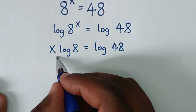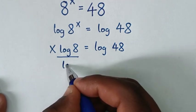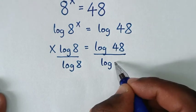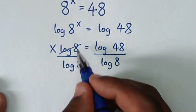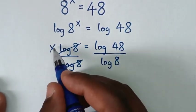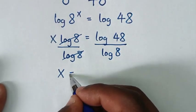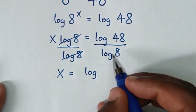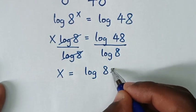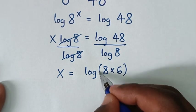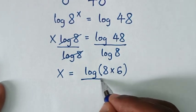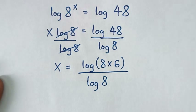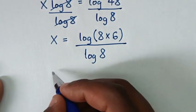Then we'll divide by log of 8 on both sides — log of 8 here and log of 8 here — so these will cancel. Then it will be x is equal to log of 48, which is the same as log of 48 written as 8 times 6, then over log of 8.